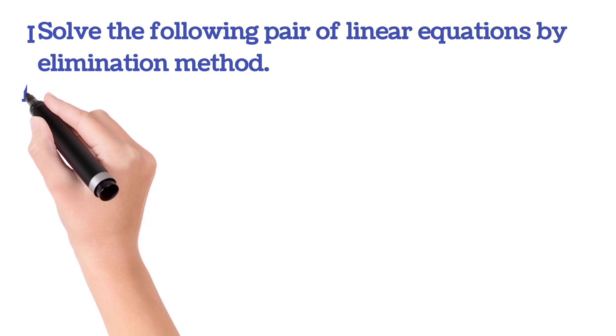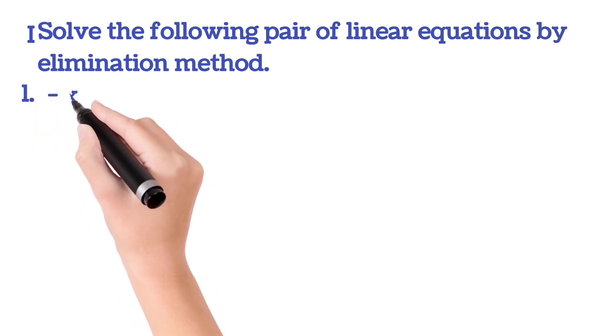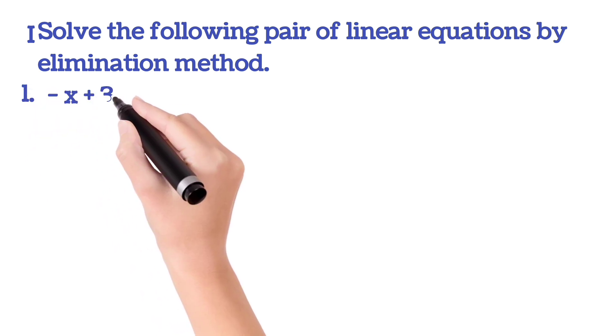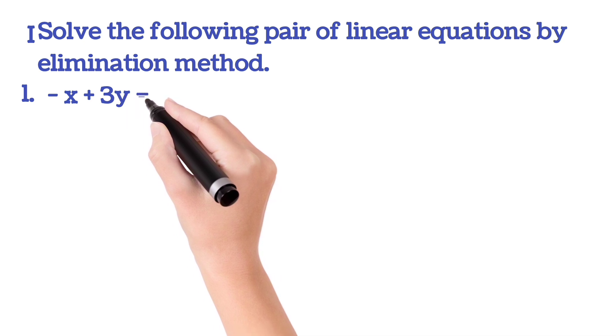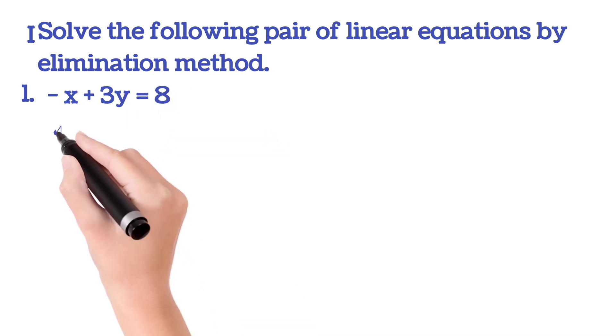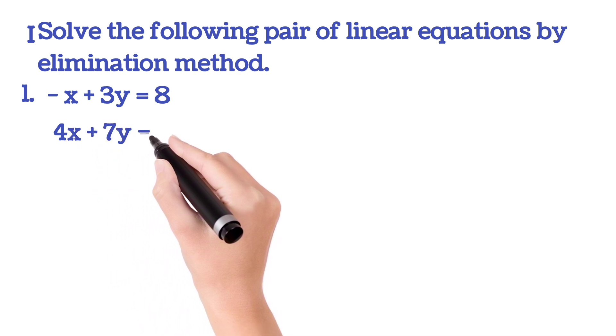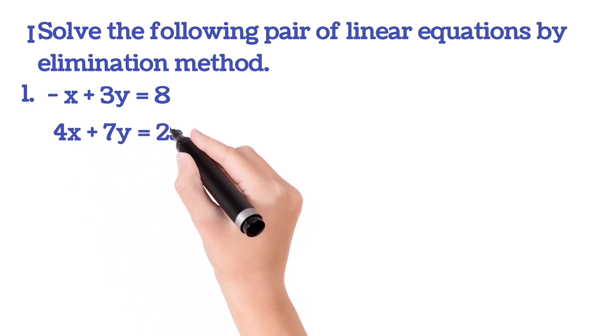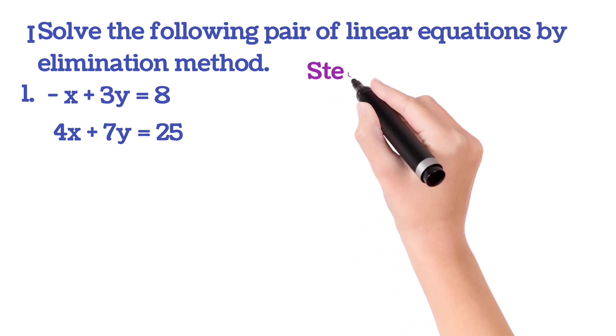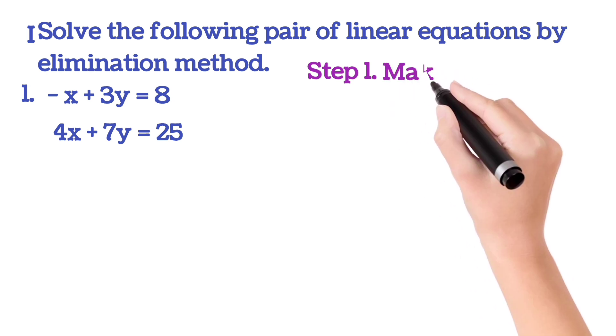So our first question is -x + 3y = 8, this is our first equation. Then second equation is 4x + 7y = 25. For solving these two equations, we will use three steps. You can solve it within two minutes.